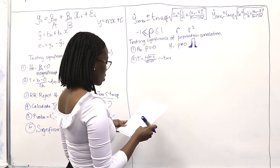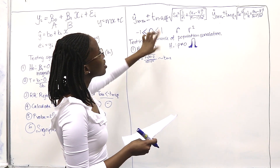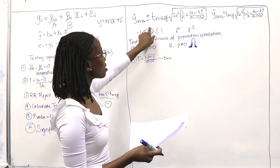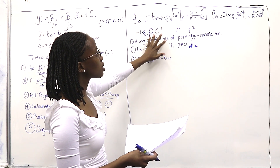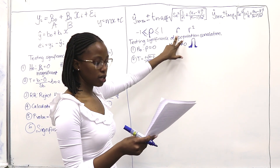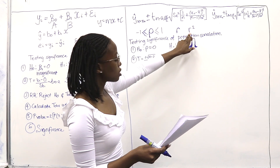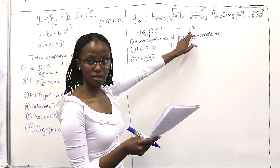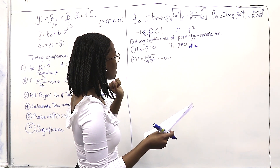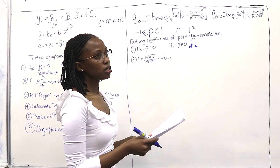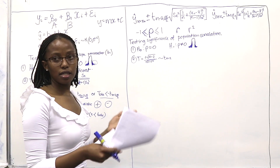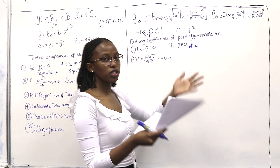Now we move on to the correlation coefficient, which is the Greek letter rho. It looks like a P but it's rho, and it represents the population correlation. There is also r from the sample, and r squared is the coefficient of determination. Correlation is about how much x relates to y — if it's closer to negative 1, it's a strong negative relationship.